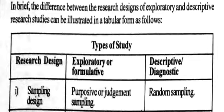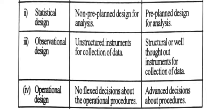The difference between research designs — explanatory and descriptive — can be illustrated in a tabular form. For explanatory or formulative studies, sampling design uses purposive or judgment sampling; statistical design uses a non-pre-planned design for analysis; observational design uses an unstructured instrument for data collection; and operational design has no fixed decision about operational procedure. For descriptive or diagnostic studies, sampling uses random sampling; statistical design is pre-planned; observational design uses a structured or well-thought-out instrument; and operational design involves advanced decisions about procedure.